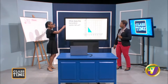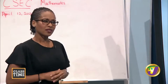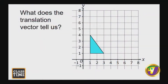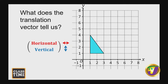Let's look at some shapes on our graph paper. The translation vector is written in column form — a value on top and a value on the bottom. The first value tells us the horizontal movement of the translation, which is parallel to the x-axis, so the movement is left or right. The second value tells us the vertical movement of the object, which is parallel to the y-axis — either upwards or downwards.